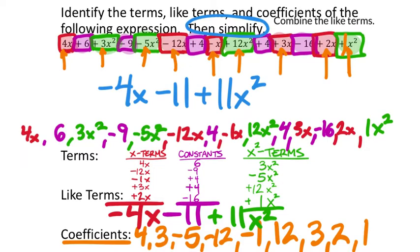Why are x terms different from x squared terms? Because of the exponent — x is just x, but x squared is x times x, that's different, so it's a different type of term: bananas, apples, and oranges. You can't combine apples with bananas. This skill is crucial in mathematics — if you can't do this now, the rest of this year and into 8th and 9th grade will be very difficult. So if you're not understanding this, now is a good time to ask questions.